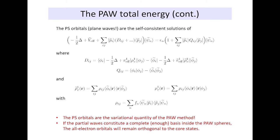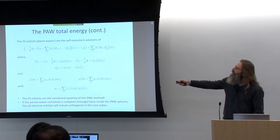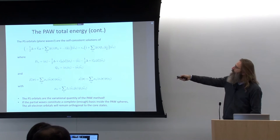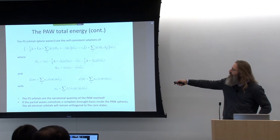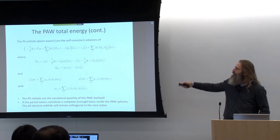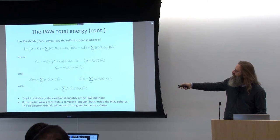The pseudo orbitals — the plane wave pseudo parts — are the variational quantities. This is just a recast of the previous equation. In real life, we're not trying to represent the pseudized partial waves per se, but to compute the plane wave part of our PAW wave function. The charge density used in these strength parameters is the actual one, not the atomic one. In that sense it differs from ultrasoft pseudopotential theory.